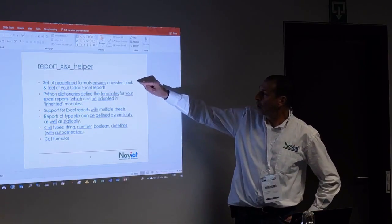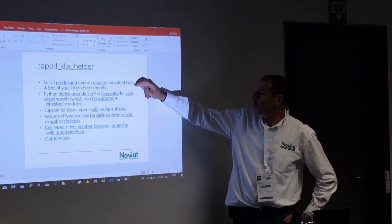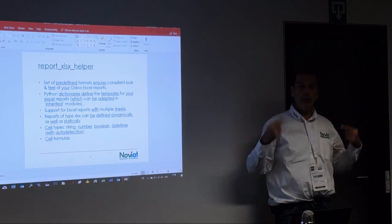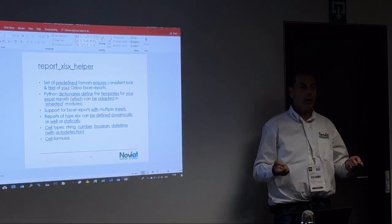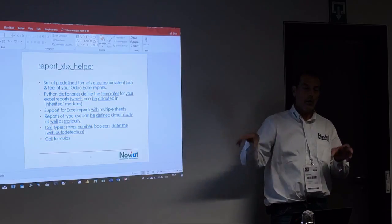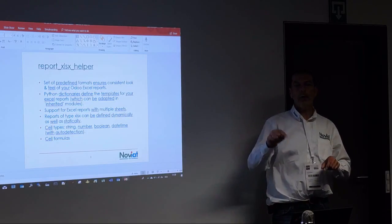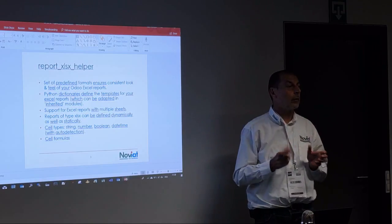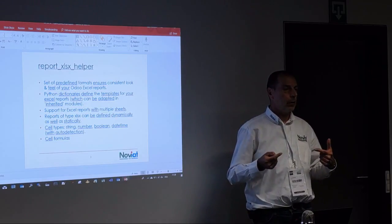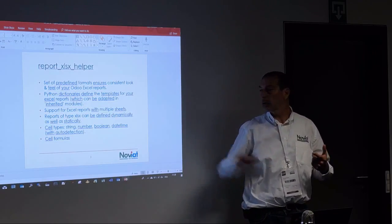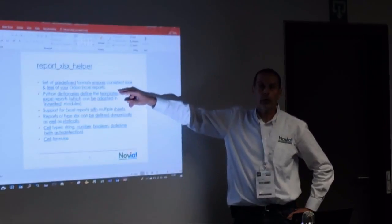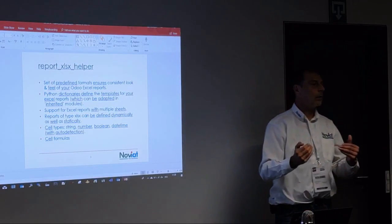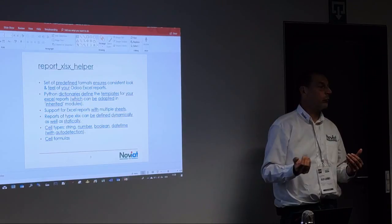It also adds Excel headers and footers. So if you actually print from Excel, you will automatically have the header and footer. You can put 'page one out of three' and it will put the date, timestamp, and so on. Everything available in the report XLSX helper is available in your module, and then in your custom module you can inherit everything and add your own customization.